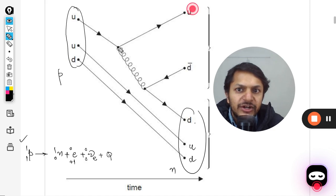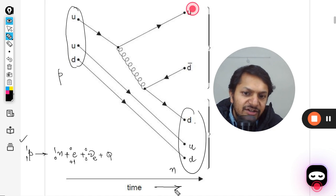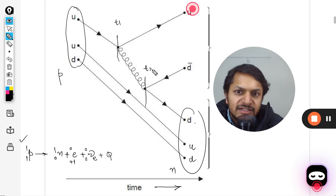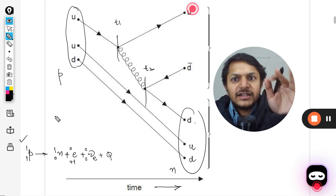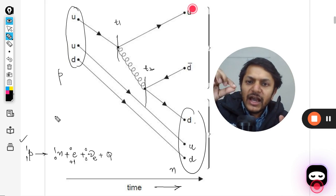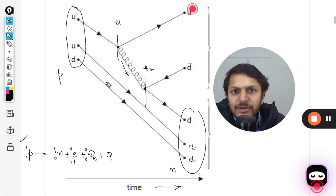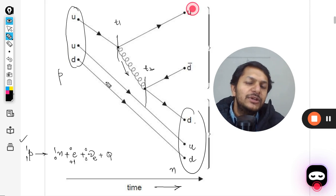Now let us see what is happening. This is the proton. So U is now getting converted into D. This U is coming here and the time is going in this direction. Time is going in this direction. I have created two timestamps here. Let me call this time T1 and this time as T2. So what is happening at T1? U is coming and U is now giving up one particle.